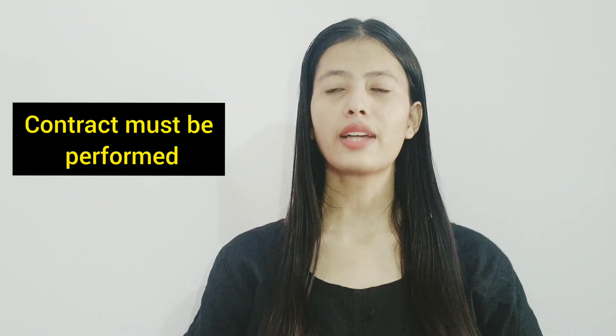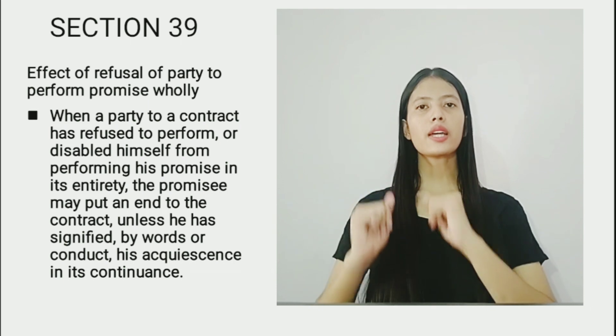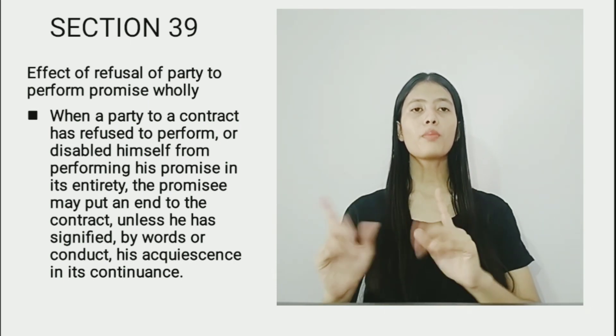Hello everyone, welcome to my YouTube channel Examination Specifications. I have covered sections 37 and 38 under the topic of 'Contract Must Be Performed' — you can check that in my playlist. Today I am going to deal with Section 39 of the Indian Contract Act, 1872, which is very important. Section 39 says: 'Effect of Refusal of Party to Perform Promise Wholly.'